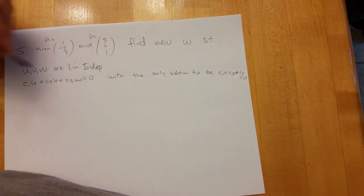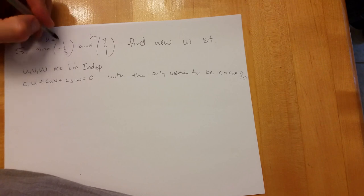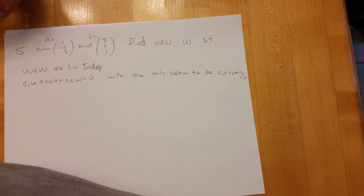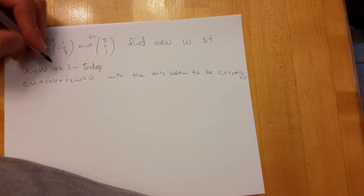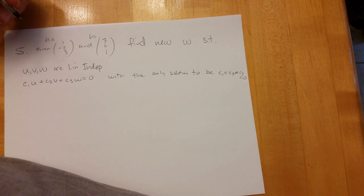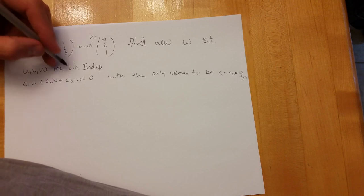I want the only solution to be c1 is the same as c2 is the same as c3 and they're all zero. So I could line them up. Now I don't know much about w other than it has three dimensions, so I'm going to have to give w some coordinates.